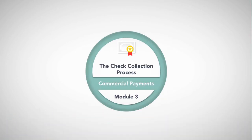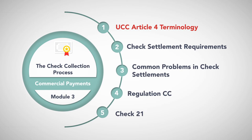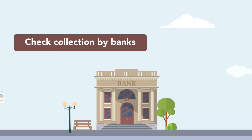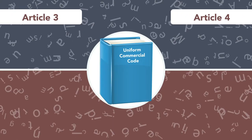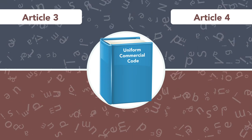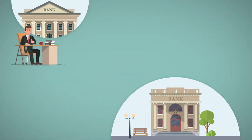Module 3: The Check Collection Process — UCC Article 4 Terminology. Article 4 of the UCC addresses check collection by banks. Articles 3 and 4 diverge in terminology and at times use different words and phrases to convey similar concepts. While Article 3 calls it a 'check' or 'draft,' Article 4 refers to it as an 'item' in the check collecting process.